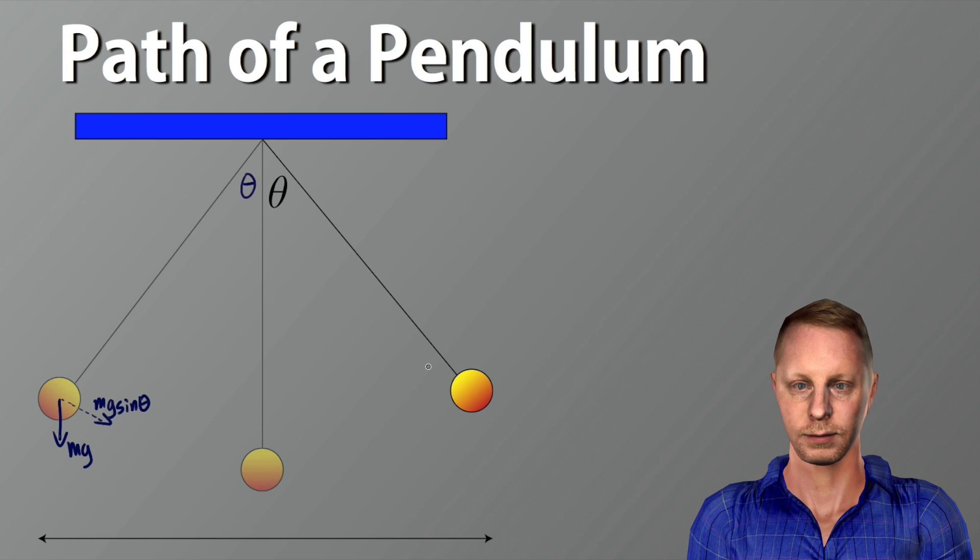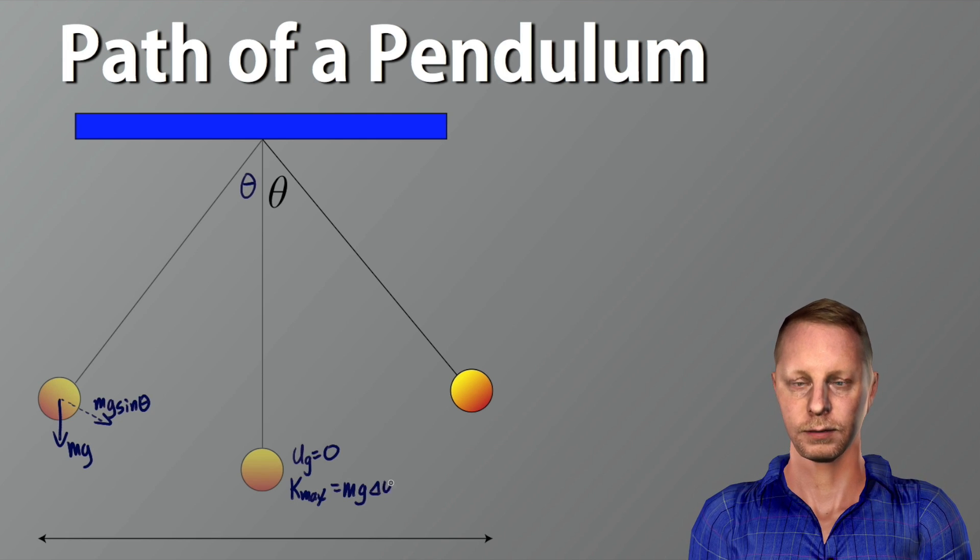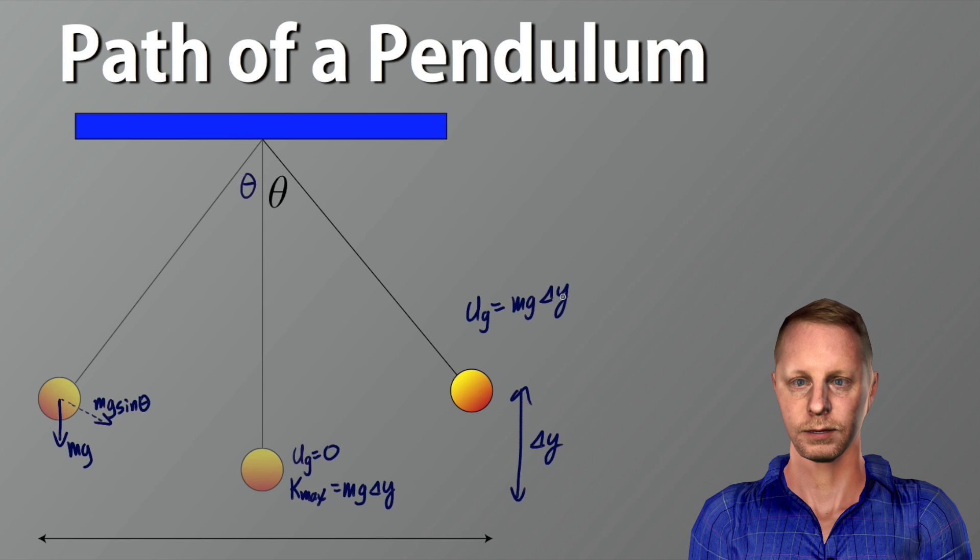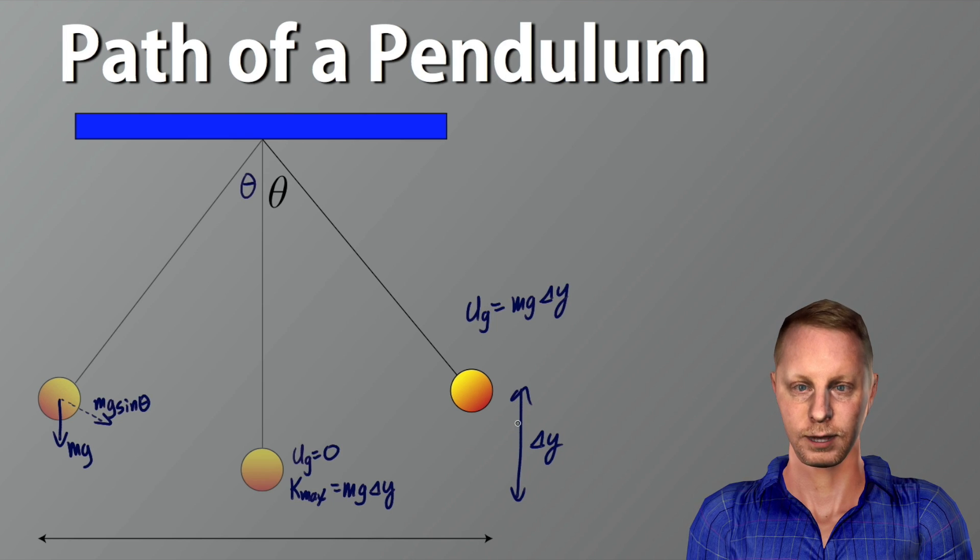If we consider our lowest point, our point where we're going to call our gravitational potential energy equals to zero, just an arbitrary reference point, then this would also be our maximum kinetic energy right there, which is going to be equal to the change in height as we go from here to here, our delta y. Which means up here at our higher point, our gravitational potential energy would be mg delta y. Or what exactly is delta y?